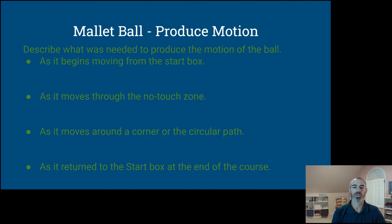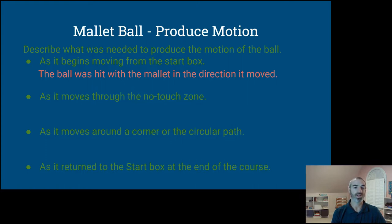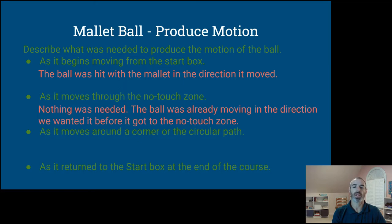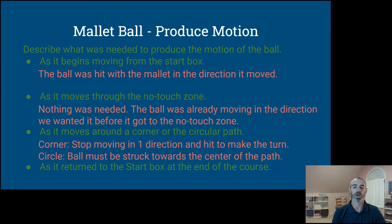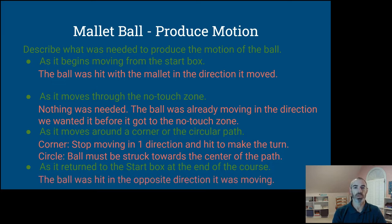So what did we have to do to produce these motions? As it began moving from the start box, the ball was hit with the rubber mallet in the direction we wanted it to move — it sped up. As it moved to the no-touch zone, nothing was needed; the ball was already moving in that direction. To make the right-hand turn, we stopped it in one direction then hit it to go the other way. In the circular path, the ball had to be struck towards the center continuously to navigate the circle. Then we hit it in the opposite direction of motion to stop it at the start-stop box.